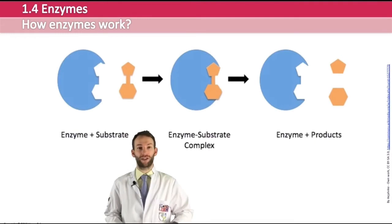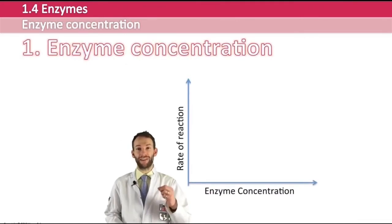Let's start with enzyme concentration. Enzymes are actually really efficient - you only need a very small amount of them for a reaction to work. However, if you do add more, then the rate of reaction will increase, as shown by this straight line graph here.